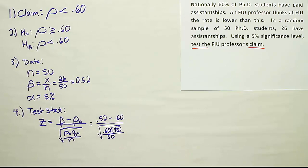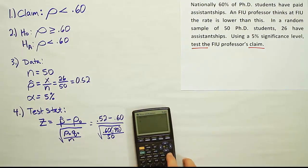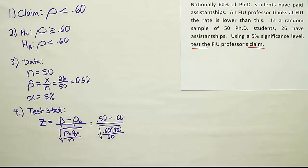So based on this, we'll do our calculation. On top, we're going to get negative 0.08. So it'll be 0.52 minus 0.60, and then we're going to divide that by the square root of 0.6 times 0.4 divided by 50. And when we're finished, we get negative 1.15. So that's our test stat, negative 1.15.